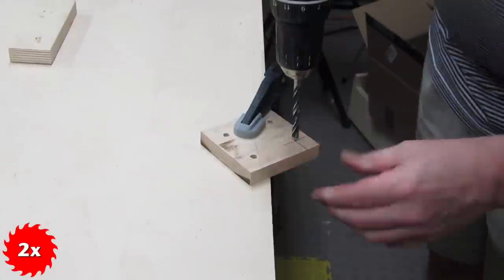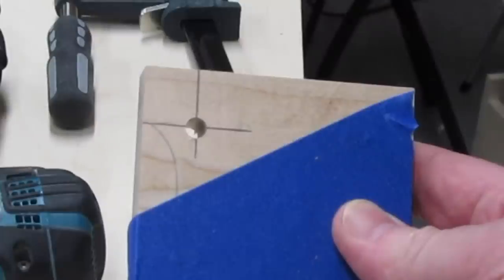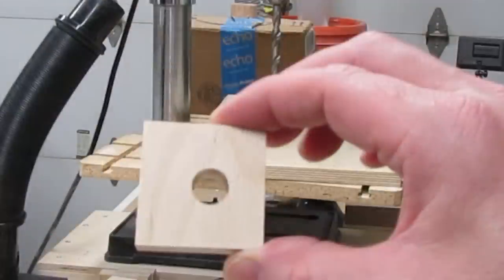Generally speaking, they start drilling right where you place them, with no skating, as long as you keep a little pressure on it at the start. They have spurs on the leading edges which shear the wood, leading to cleaner holes with far less tear-out than virtually any other bit.